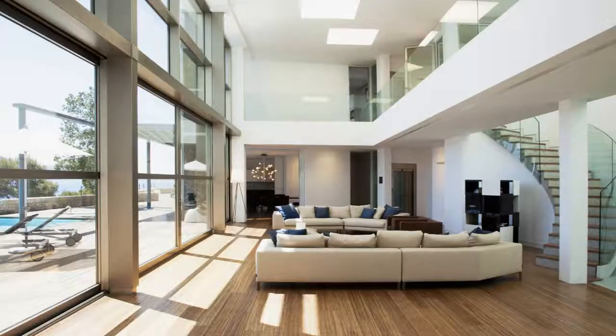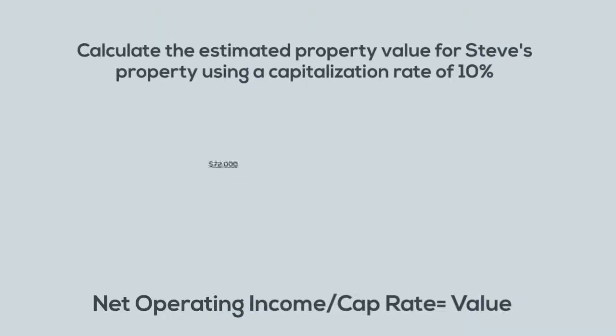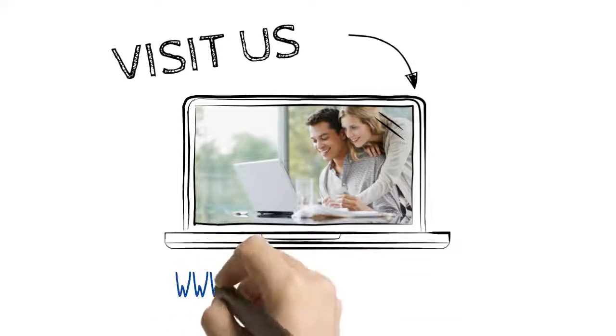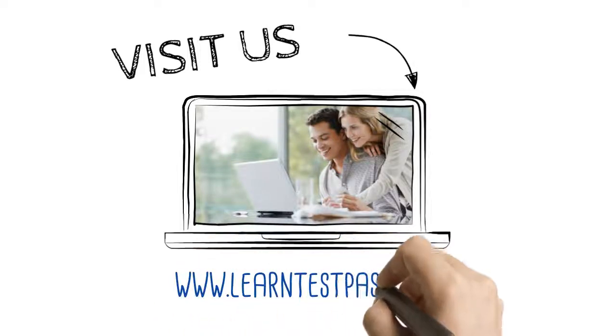Now that we have calculated the net operating income, it is easy to calculate the estimated property value based on whatever capitalization rate is given. For example, let's calculate the estimated property value for Steve's property using a capitalization rate of 10% — so that would be $72,000 divided by 10%. For more videos like this, visit us at www.learntestpass.com.